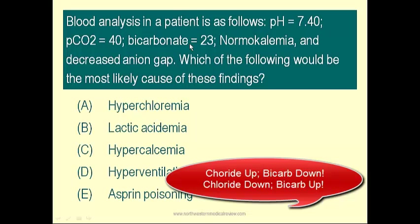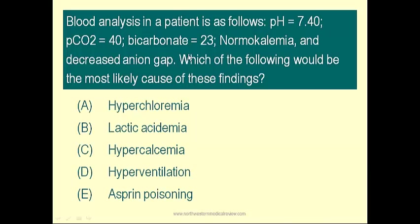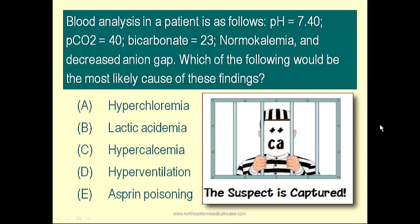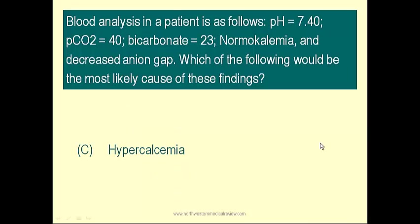How about lactic acidosis when the pH is normal? No. How about aspirin poisoning when pH is normal? No. How about hyperventilation when CO2 is normal? No. After you rule out everything, the remainder is your answer. So you have to blame it on hypercalcemia. Why does hypercalcemia cause decreased anion gap?